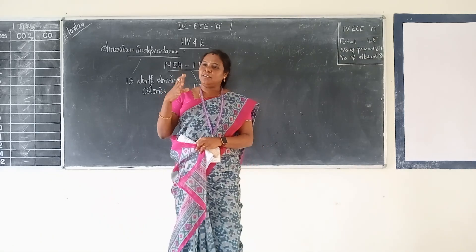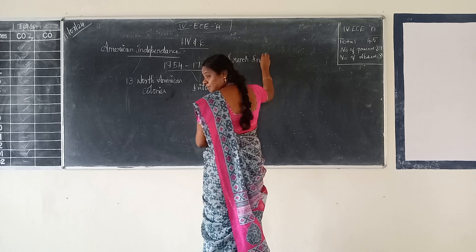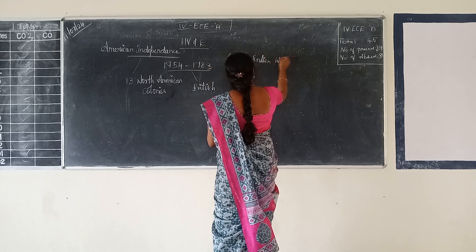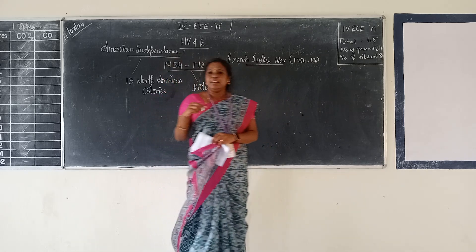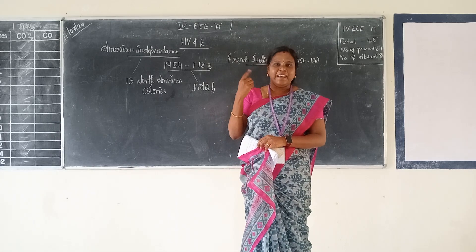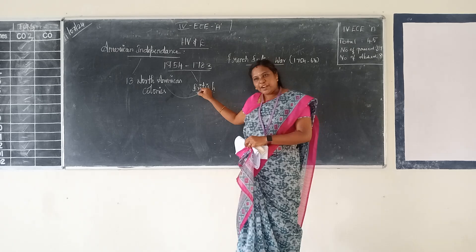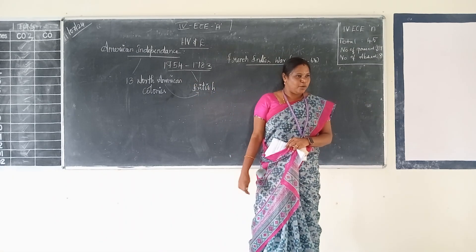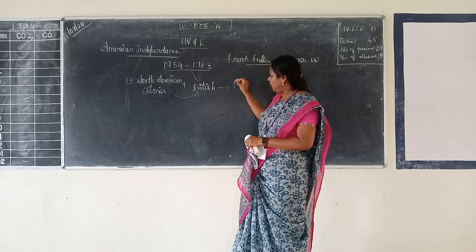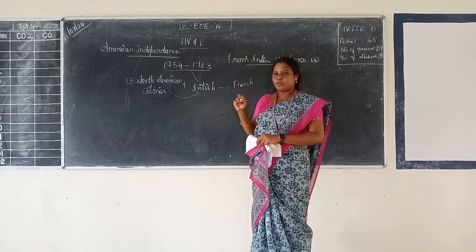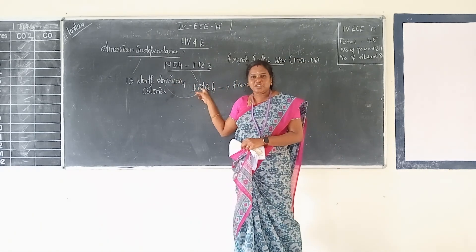The first event in America was the French-Indian War, which happened in 1753. It was a war against the French in America. The 13 North American colonies stood with the British people and fought against the French in that war. They were together against the French people, and they won.